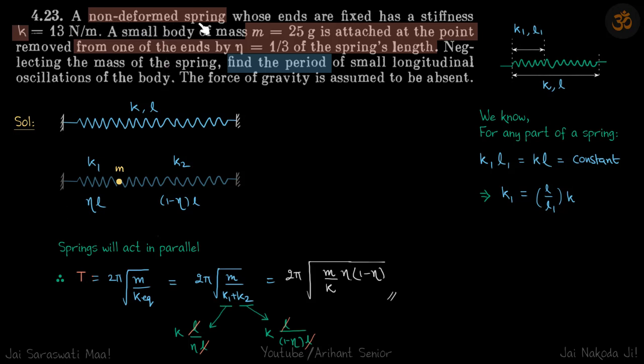We have a non-deformed spring whose ends are fixed like this. It's given that the stiffness of the spring is k. Now a mass m is attached at a point which is from one of the ends eta times the total length, so this mass is attached here which is from one of the ends eta times the length.